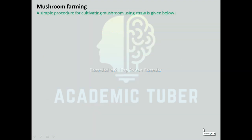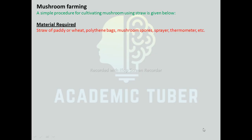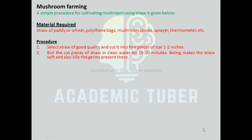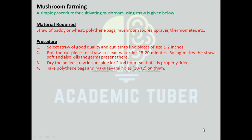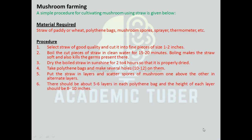Mushroom Farming. A simple procedure for cultivating mushrooms using straw is given below. Materials required: straw of paddy or wheat, polythene bags, mushroom spores, sprayer, thermometer, etc. Procedure: Select straw of good quality and cut it into fine pieces of 1 to 2 inches. Boil the cut pieces of straw in clean water for 15 to 20 minutes — boiling makes the straw soft and kills the germs present. Dry the boiled straw in sunshine for 2 to 4 hours. Take polythene bags and make several holes on them. Put the straw in layers and scatter mushroom spores one above the other in alternate layers. There should be about 5 to 6 layers in each polythene bag, and the height of each layer should be 8 to 10 inches.